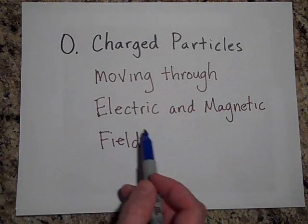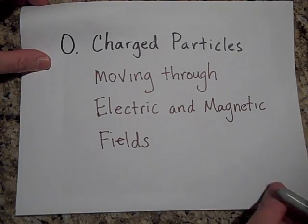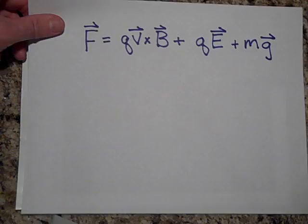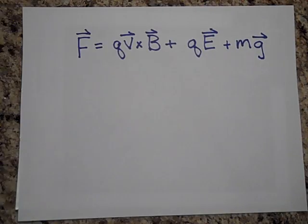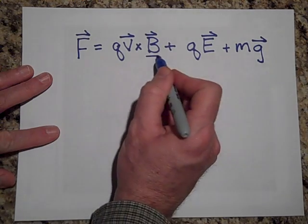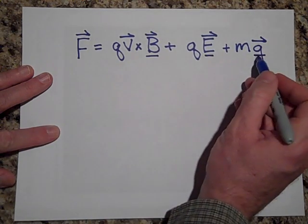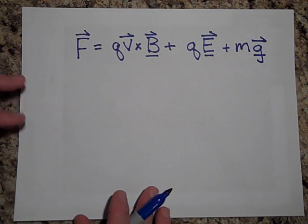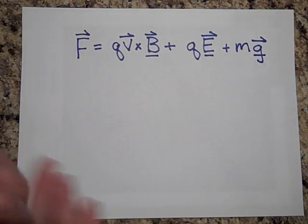I'd like to tell you about charged particles moving through electric and magnetic fields - not just magnetic fields but electric fields too. As a particle moves through fields like a B field, an E field, and a G field (the gravitational field, electric field, and magnetic field), it experiences all these different forces.